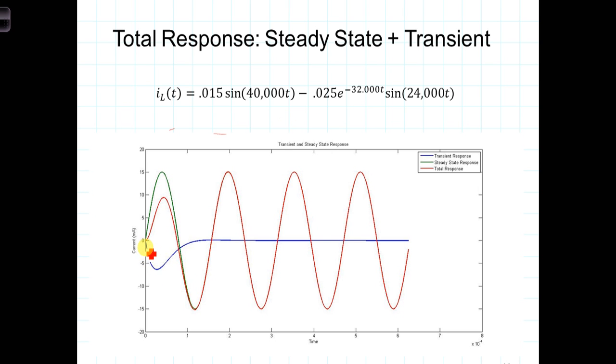The transient response is represented by this blue graph. As you can see, it starts out with some oscillation but dies out relatively quickly based upon or determined by this exponential decay term here. It is oscillating at 24,000 radians per second but dies out before it gets through one complete oscillation.